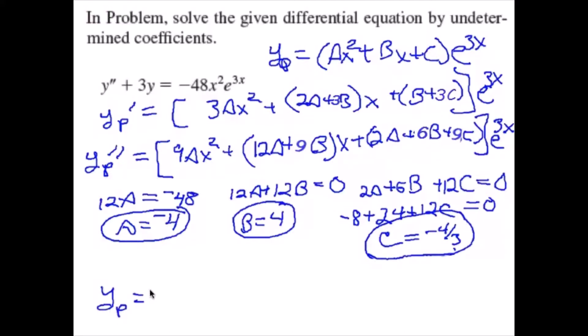So yp is going to be negative 4x squared plus 4x minus 4 thirds times e to the 3x.